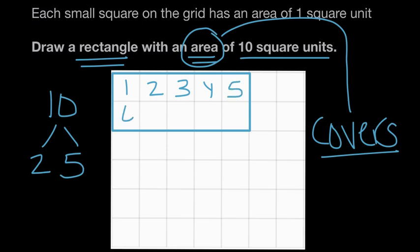And the second row of five has unit squares 6, 7, 8, 9, and 10. So here's one perfect answer. A rectangle that has two rows of five square units.